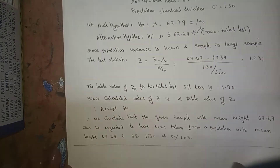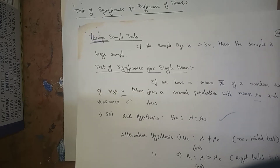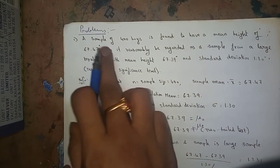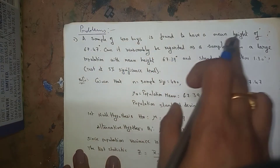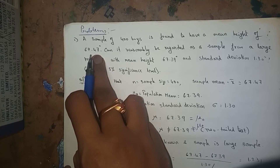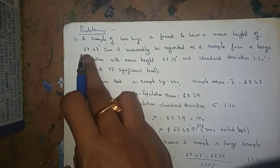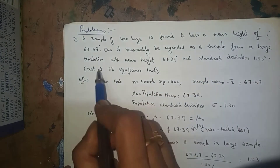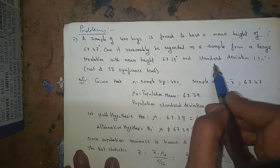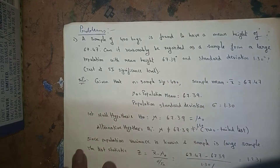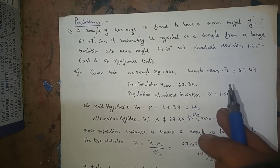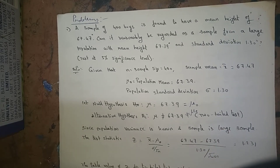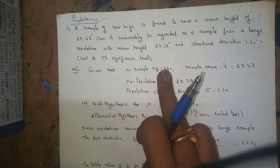Now the first problem: a sample of 400 boys is found to have a mean height of 67.47. Can it reasonably be regarded as a sample from a large population with mean height 67.39 and standard deviation 1.30? Test at 5% level of significance. In every problem, the level of significance is either 5% or 1%; if not specified, take 5% by default.